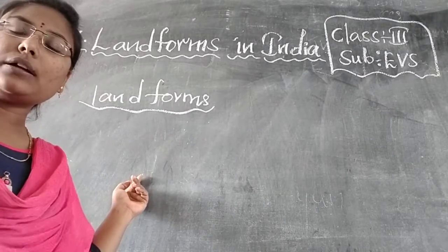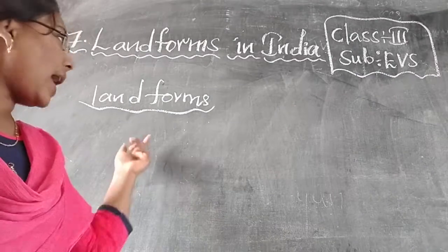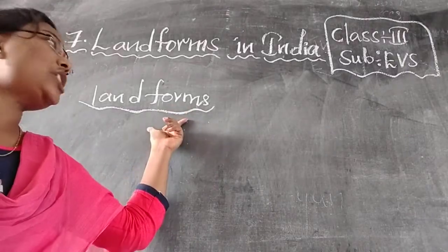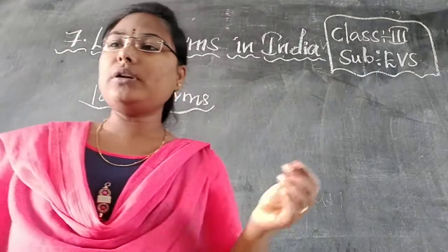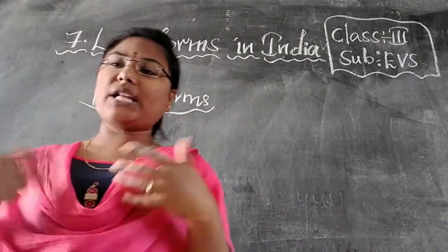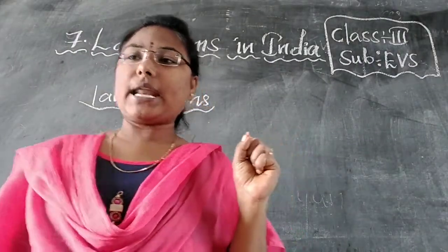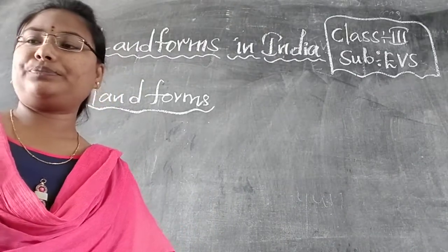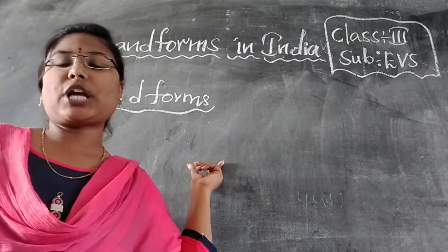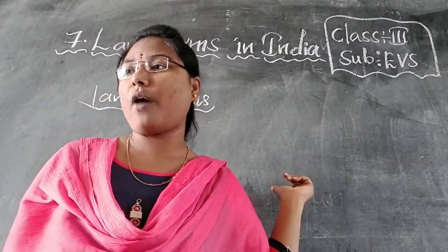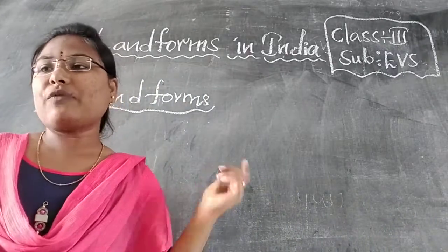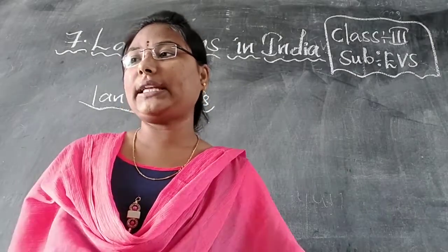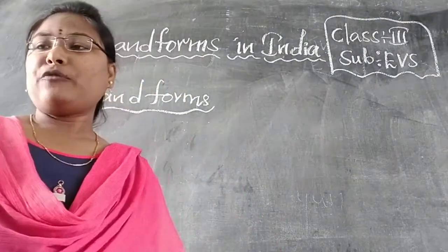Understood the landforms? What is the spelling of landforms? L-A-N-D, F-O-R-M-S — landforms. Landforms is any natural formation of rock and dirt found on the earth. The landforms are defined as the natural physical features found on the surface of the earth, created as a result of various forces of nature.